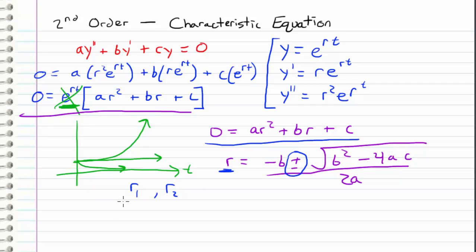So if we take this result and we plug it back into our original assumption that y is of the form e to the rt, then we have two potential solutions: y1 which is equal to e to the r1 times t and y2 which is equal to e to the r2 times t.